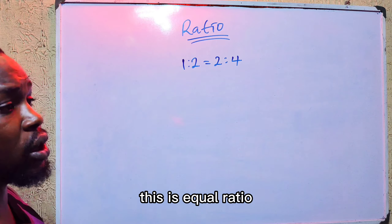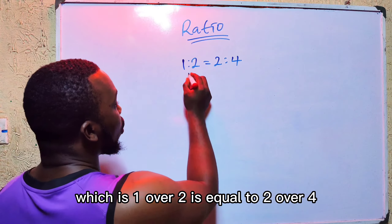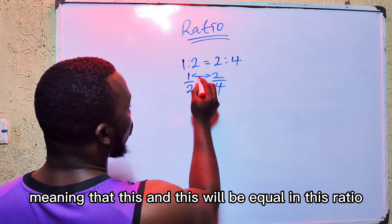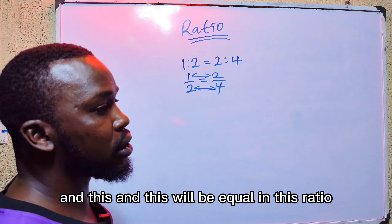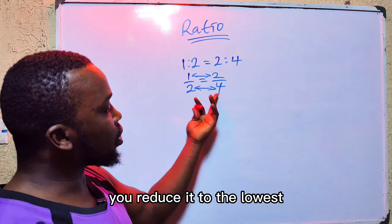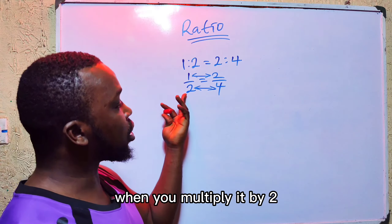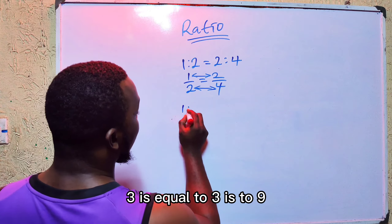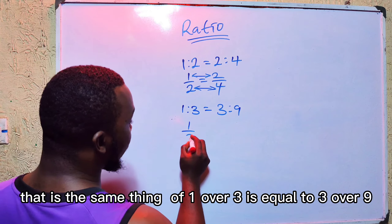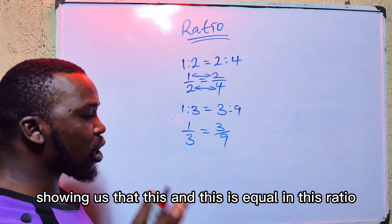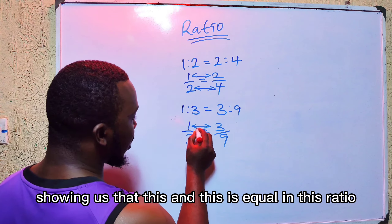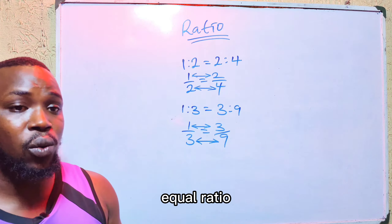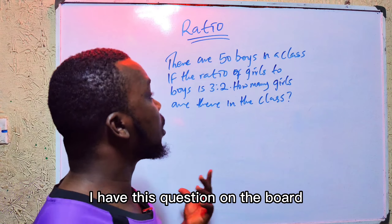Here is another similar question: two friends Andrew and Anne agree to share a gift of 185 packets of biscuits in the ratio of 2 is to 3. How many packets of biscuits does each receive? We write out Andrew is to Anne. Andrew has the share of 2 and Anne has the share of 3. The aggregate ratio is 2 plus 3, which gives us 5.